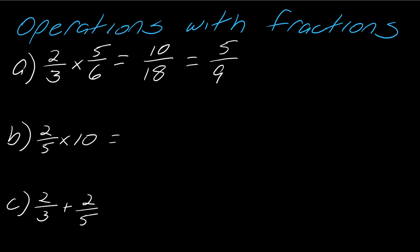Now for this second one, 2 fifths times 10, I know that I can rewrite 10 as 10 over 1. And the other thing that I notice is that 5 goes into 10 twice. So this actually just turns into the calculation 2 times 2. So this is really just 4 over 1, which equals 4 in the end.